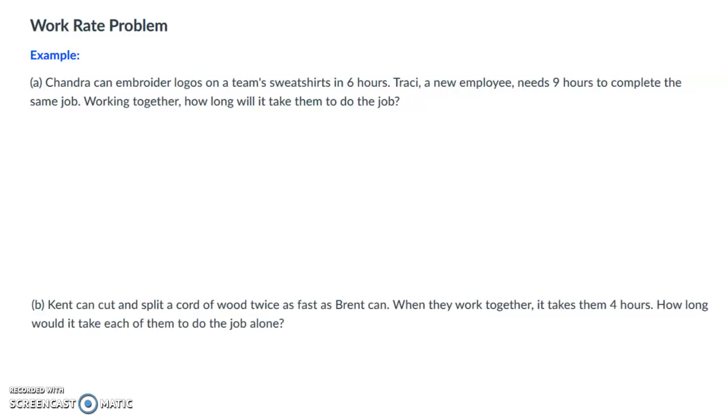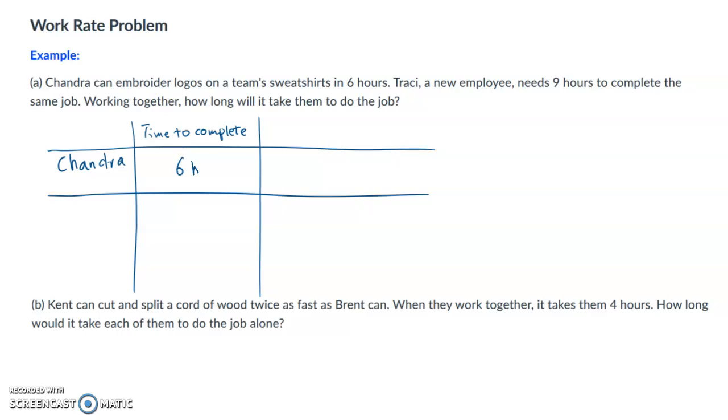Okay let's start from A. Chandra can embroider logos on a team's sweatshirts in six hours, so the time for Chandra to complete the job is six hours. Tracy can complete the same job in nine hours, and we're looking for the number of hours it will take for both of them to do the job.